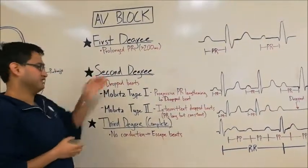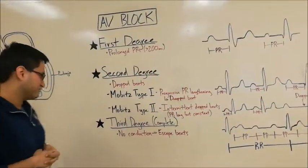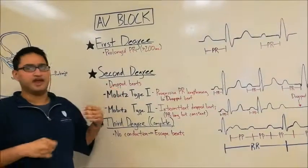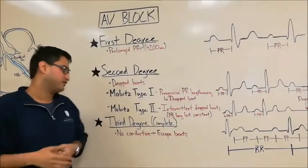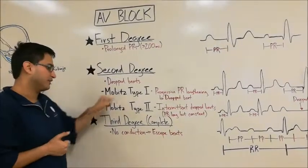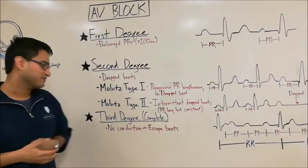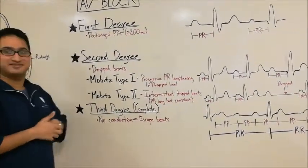Here we have second degree AV block. In second degree AV block, we have drop beats. But it's not every beat dropped, it's certain beats. Now second degree is further broken up into Mobitz type 1, also called Wenckebach, which is a funny name. And Mobitz type 2.